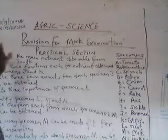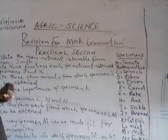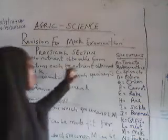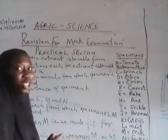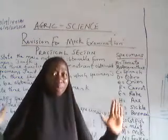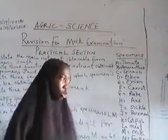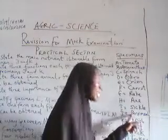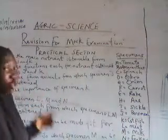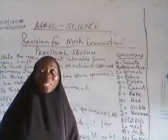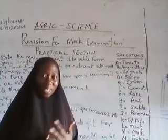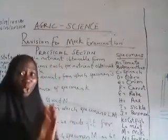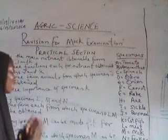Majority of you got that question right. The B part asks us to state three functions each for the nutrients obtainable from specimens J and K. Since specimen J contains calcium, the points you raise should be specific to calcium's functions — not general about all minerals. The functions of calcium are: it is essential for strong bones and teeth, it is essential for strong egg shell formation, and it is also essential for blood clotting.